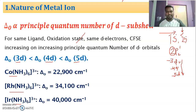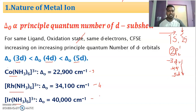Here the ligand is the same and the oxidation number of the metal ion is the same. The only difference is the principal quantum number: for cobalt (3d series) it is 3, for rhodium (4d series) it is 4, and for iridium (5d series) it is 5. Their delta naught values are 22,900, 34,100, and 40,000 cm⁻¹ respectively. If the principal quantum number increases, their energy also increases.